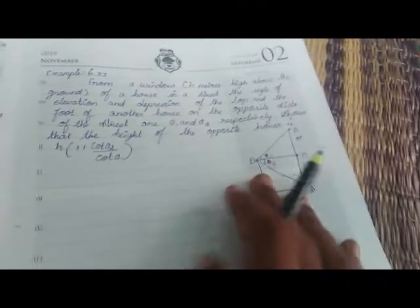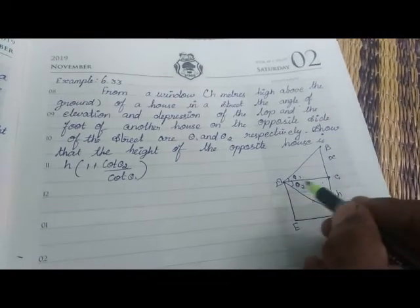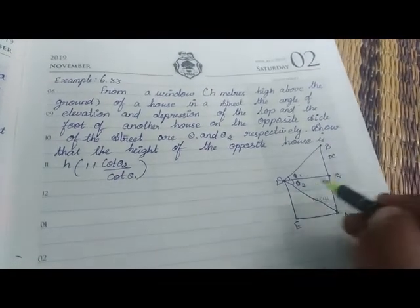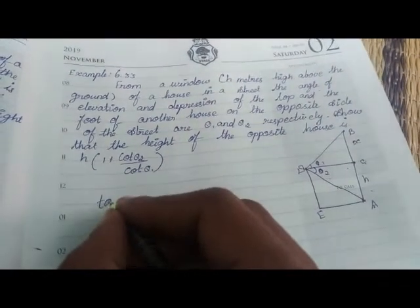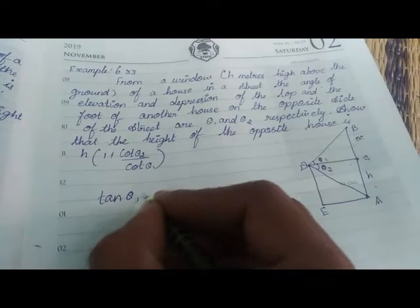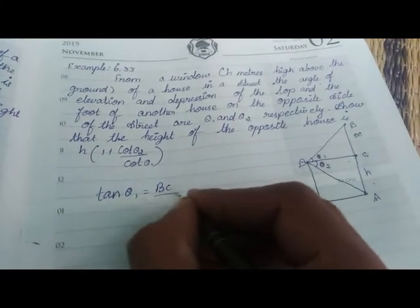x plus height. So first, tan theta1 is the opposite side divided by adjacent side. So tan theta1 is BC divided by DC.